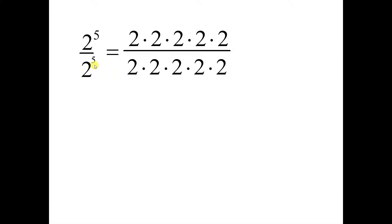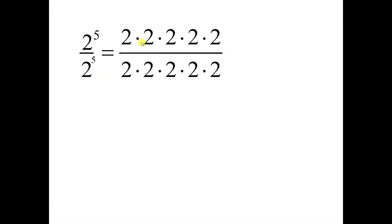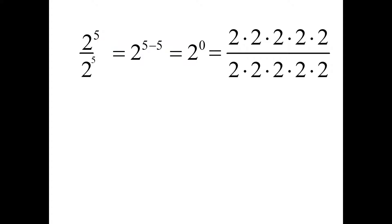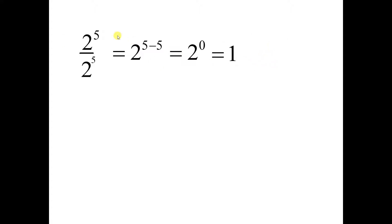Now let's consider 2 to the 5th again, but this time let's divide by 2 to the 5th. Of course that equals 1. And if we use the rule we saw last time, 5 minus 5 is 0, so this is 2 to the power of 0, and it equals 1. This would work for any base and any exponent, provided the bases are the same. So 2 to the power of 0 equals 1 — that's true for everything except for 0, but we won't talk about that.